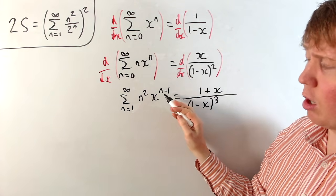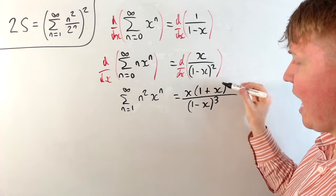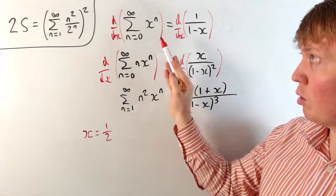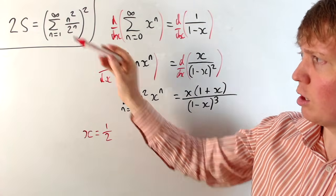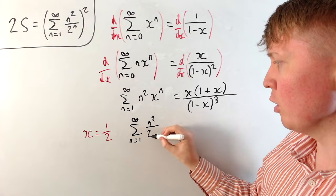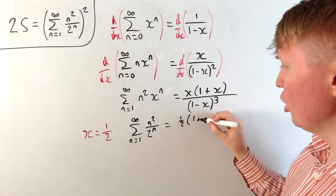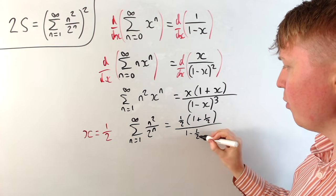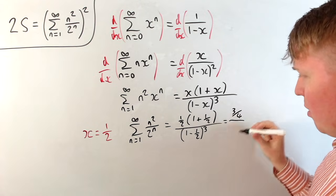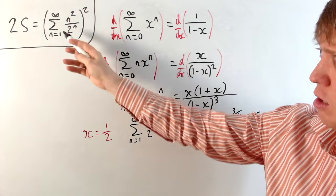Because we've got x to the n minus 1, we want x to the n, so we multiply by x on both sides. Then we set x equal to a half, which is valid since it lies between negative 1 and positive 1. We get our original sum from n equals 1 to infinity of n squared over 2 to the n. Evaluating: we get a half times 1 plus a half, divided by 1 minus a half all cubed. The numerator is a half times 3 over 2, giving 3 quarters, and the denominator is a half cubed, which is an eighth. So 3 quarters divided by an eighth gives us 6. This entire inner sum equals 6.